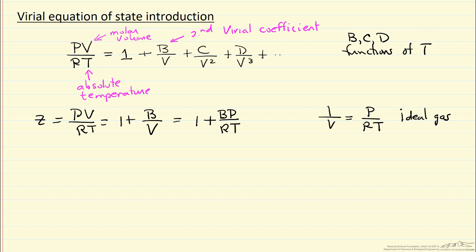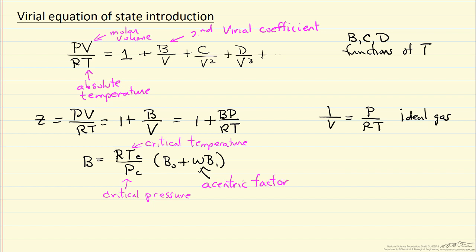Now what we do to apply the Virial coefficient is we estimate B by using some correlation, so B is related to critical temperature, critical pressure, times another constant - now this is the eccentric factor, and that's something we can look up for a given pure component.